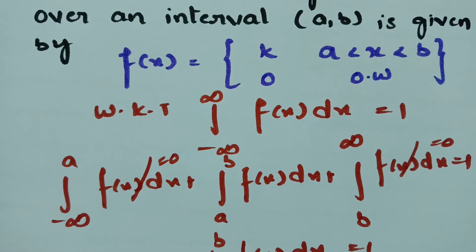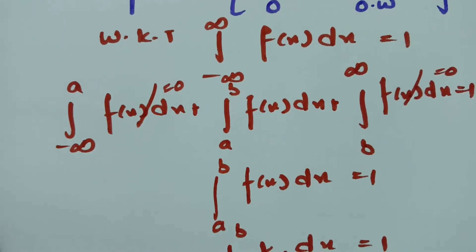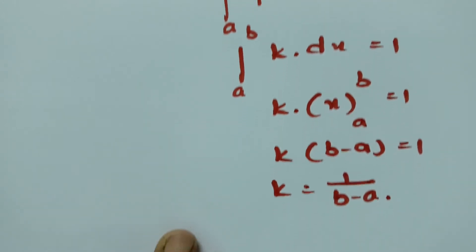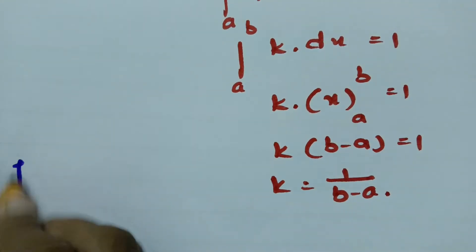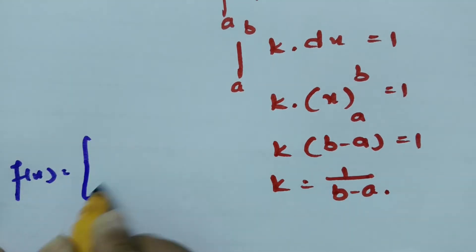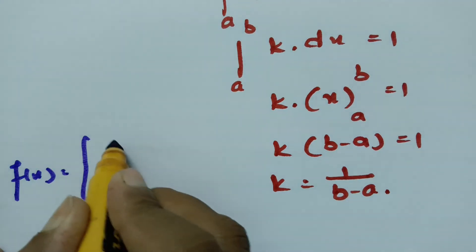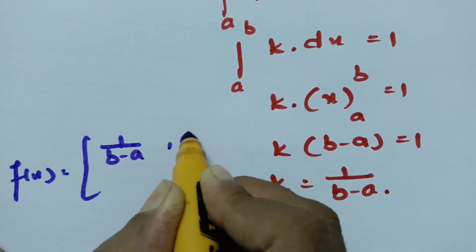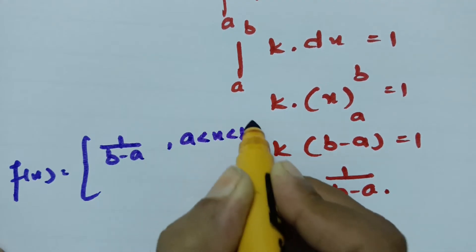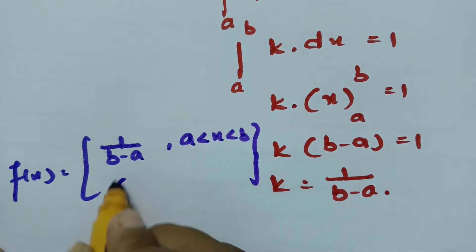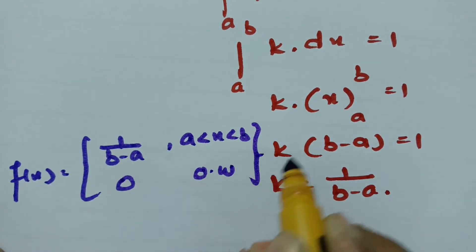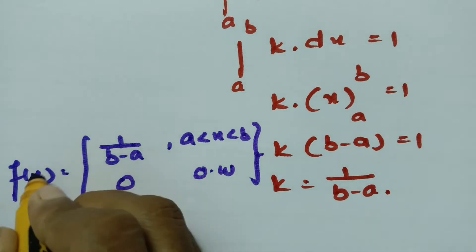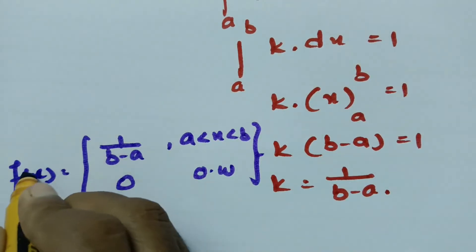Therefore the probability density function of the uniform distribution can be written as f(x) equals 1/(b minus a) when x lies between a and b, and 0 otherwise. This is the PDF of the uniform distribution.